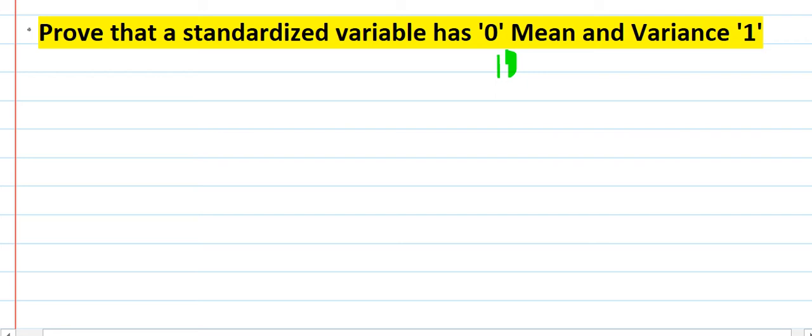We are going to prove that the standardized variable has zero mean and the variance equal to one. So let's first of all understand what is the standardized variable.